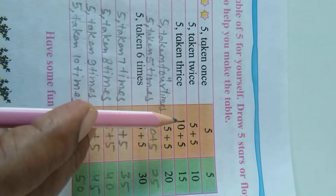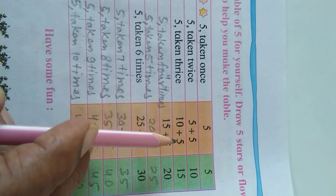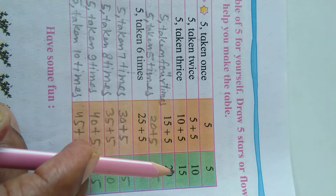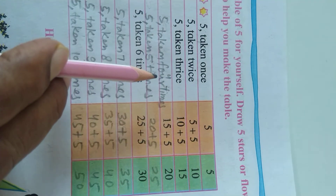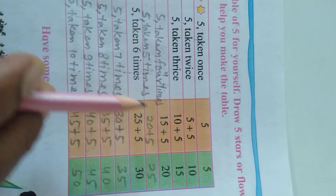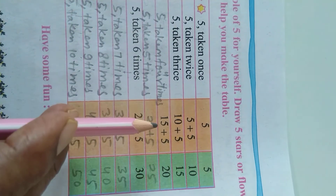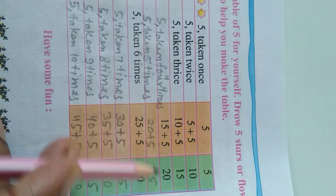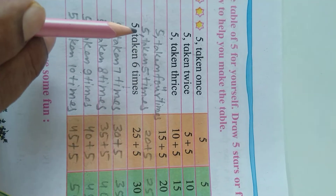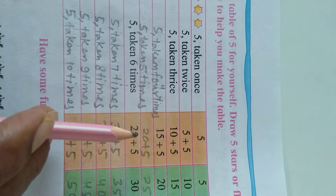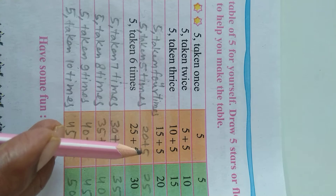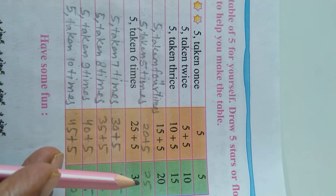5 taken thrice — 10 plus 5 is 15. 5 taken 4 times — 15 plus 5 is 20. 5 taken 5 times — 20 plus 5 is 25.